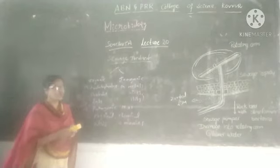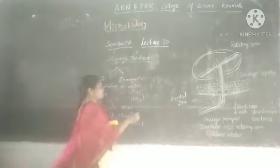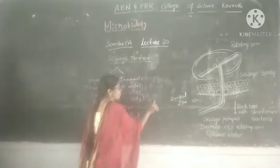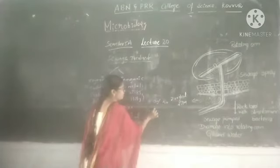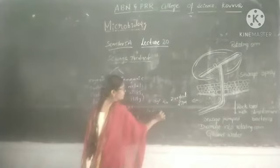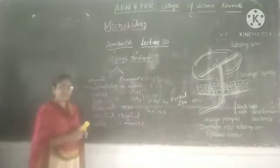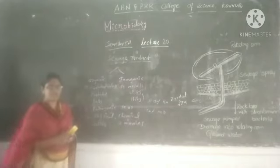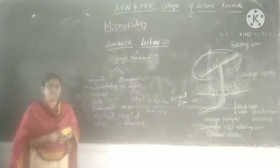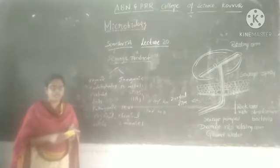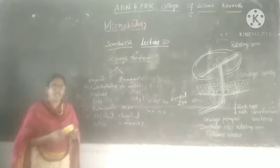Sewage is mainly composed of 80% water. The remaining 20% contains micro-organisms. Examples of micro-organisms found in sewage include bacteria, fungi, algae, protozoa, and nematodes.